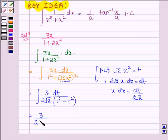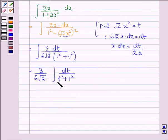Which is in the form of integral 1 upon x square plus a square dx, where in place of x we have t and in place of a we have 1.